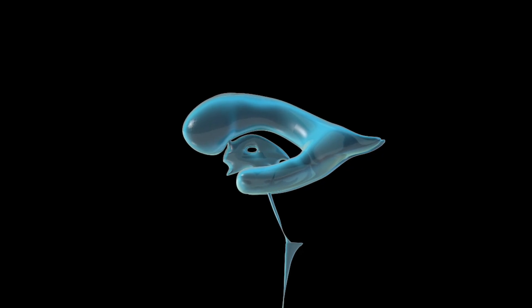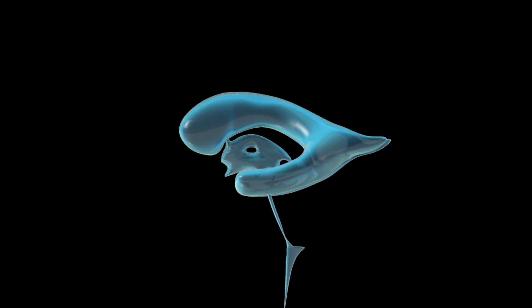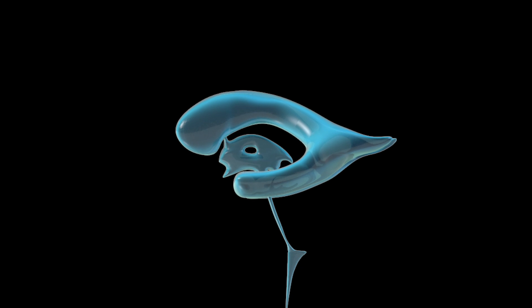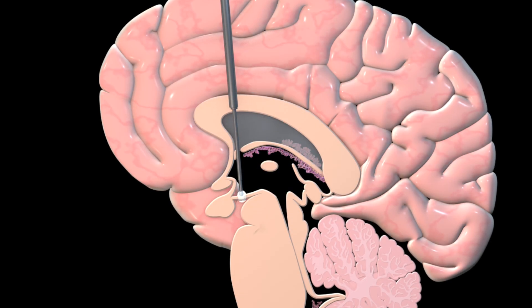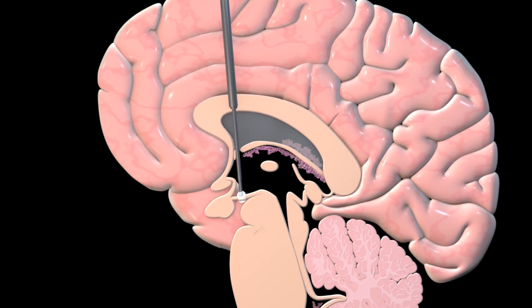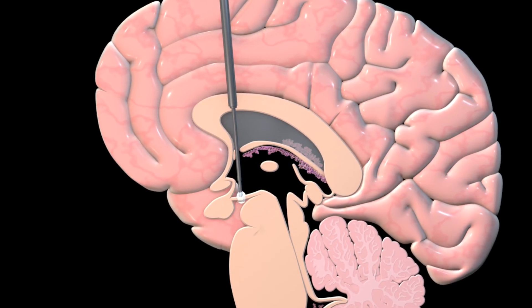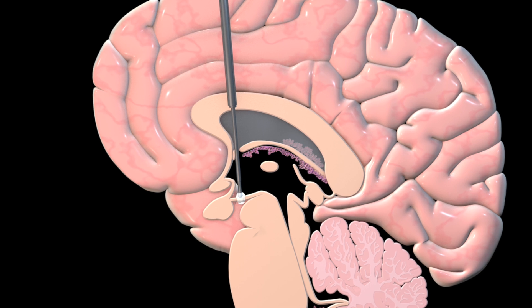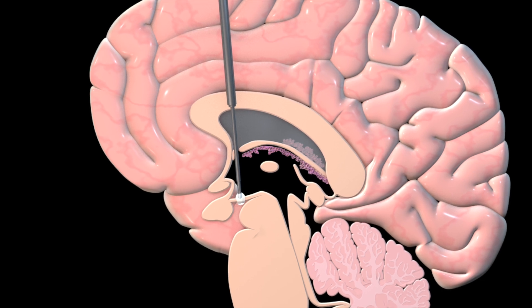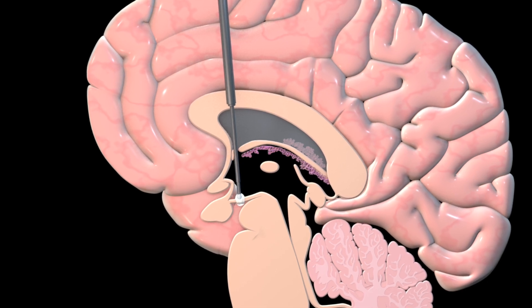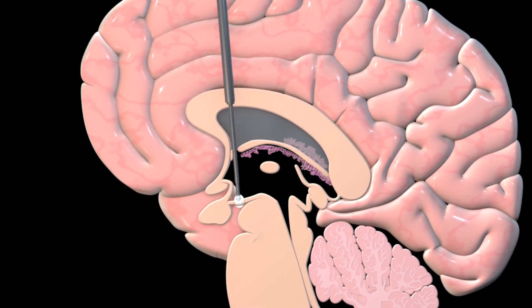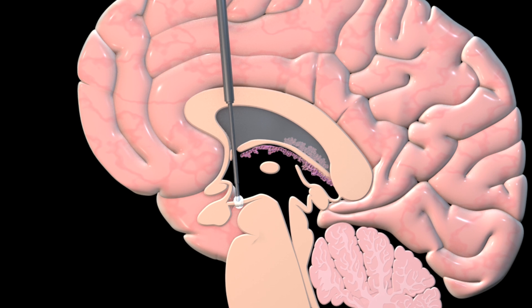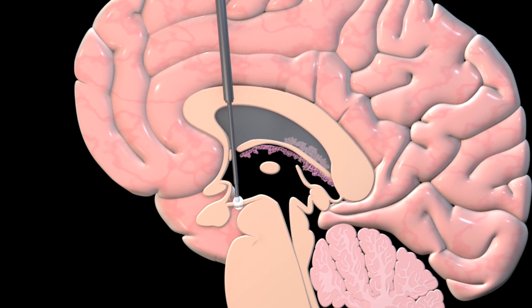With CSF now able to exit, the ventricles decrease in size and pressure is relieved. An endoscopic third ventriculostomy provides an elegant solution to a difficult problem and proves how in neurosurgery, every millimeter counts.